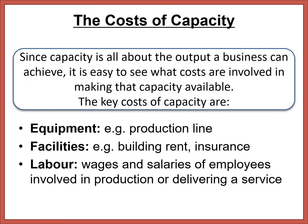The main costs of capacity are: equipment — your production line machinery; facilities — building rent, insurance, and the space you occupy; and labour — wages and salaries of employees involved in production or delivering a service. When talking about the cost of capacity, think about what is being used to produce, where it's being produced, and who is producing it.